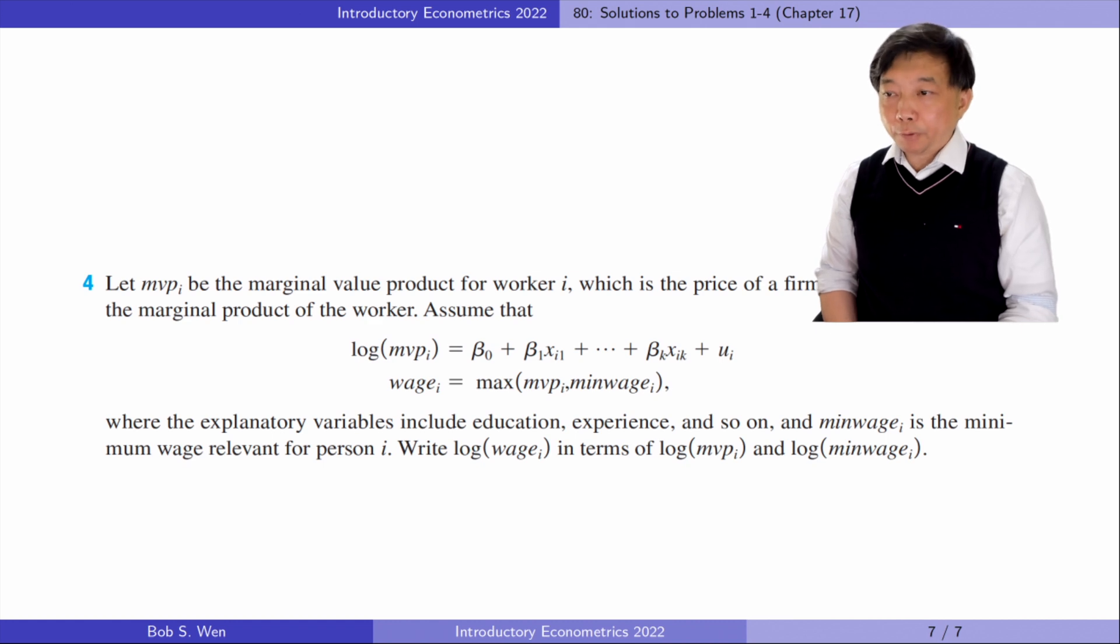Let's solve problem four. Let MVPᵢ be the marginal value product for worker i, which is the price of a firm's good multiplied by the marginal product of the worker. Assume that the log of marginal value product is a function of education, experience and so on.